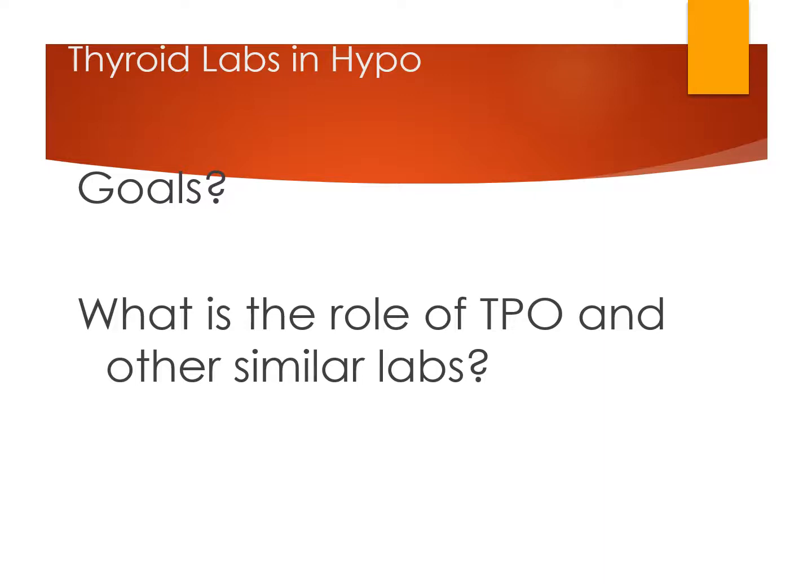We'll talk in a minute about the role of T4 and T3. TPO and thyroglobulin antibodies are a way to tell whether or not a thyroid condition is autoimmune — that's a very different situation than if it's not autoimmune. For hypothyroidism, there isn't much difference in approach whether it's autoimmune or not. But with hyperthyroidism, there can be a pretty dramatic difference.